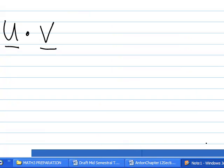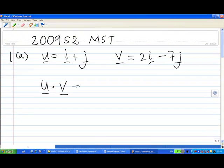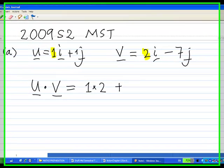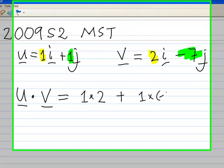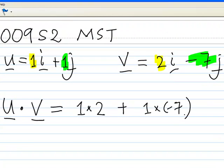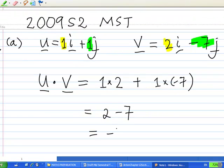Therefore, in this case, u dot v, you can see that this is equal to, this is 1i, so it's 1 times 2. Alright, so this is equal to 1 times 2 plus 1j and minus 7j. So, this is 1j and minus 7j. And in the end, this is equal to just a scalar, 2 minus 7 is equal to minus 5.